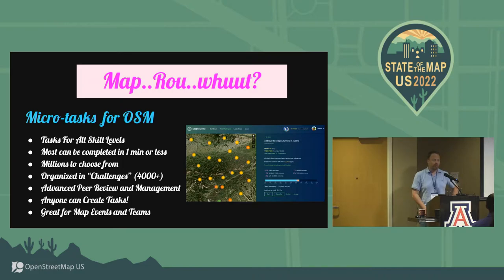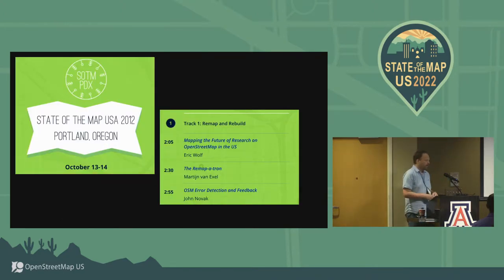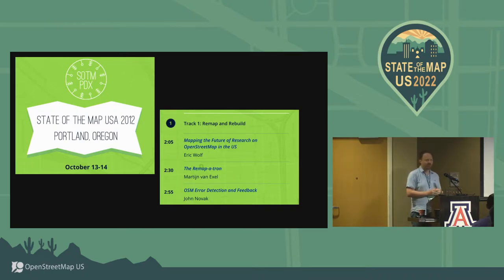I think MapRoulette is great for map events and for teams that want to solve problems together. I use it in my local Salt Lake City community where I live. It's always a good way to get people excited about solving specific issues in OSM. The first time I talked about what is now MapRoulette was in 2012, ten years ago in Portland at State of the Map.